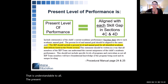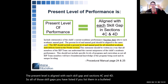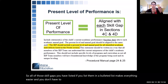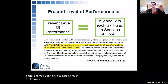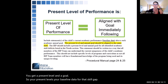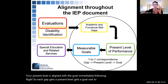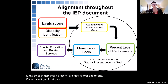The present level is aligned with each skill gap in sections 4C and 4D. If you list your skill gaps in a bulleted list, it makes everything easier and you don't have to type as much. For each skill gap listed in section 4C, 4D, and 4E, you get a present level and a goal. So each gap gets a present level and a goal — one-to-one. If you list four gaps in section 4, you have four present levels and four goals corresponding to each specific skill.